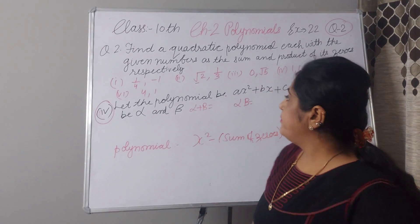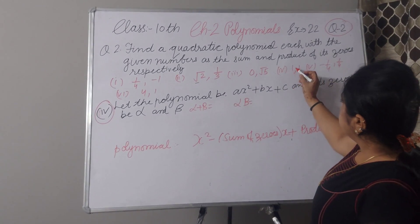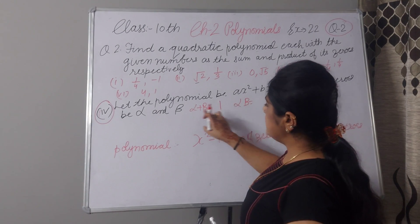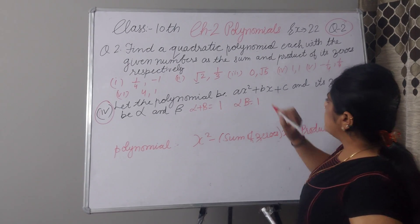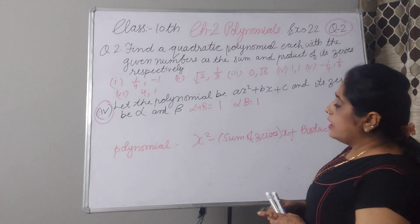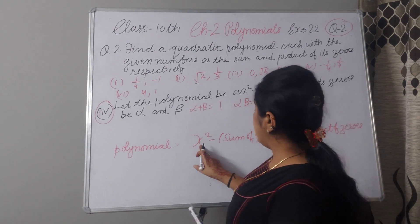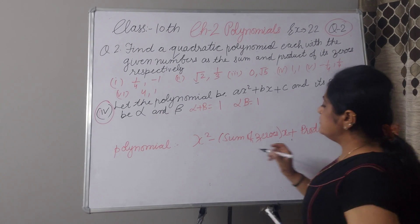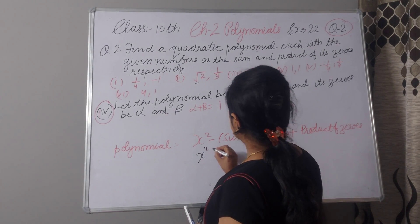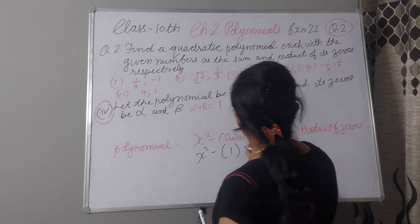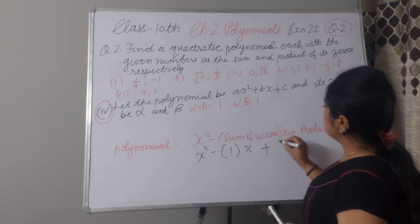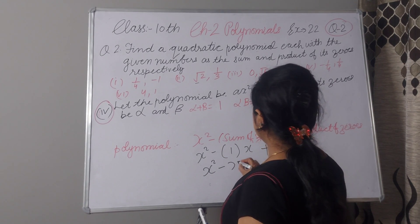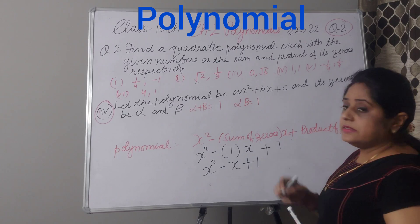Now, fourth part. The sum of zeroes is 1 and the product of zeroes is 1. So alpha plus beta equals 1 and alpha times beta equals 1. Our polynomial will be x² minus (sum of zeroes) times x plus (product of zeroes): x² minus 1 times x plus 1. Our polynomial is x² minus x plus 1.